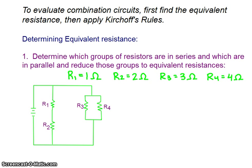I've chosen some resistance values. R1 is 1 ohm, R2 is 2 ohms, R3 is 3 ohms, R4 is 4 ohms, just to keep things easy and simple number-wise. We're going to just first combine R1 and R2,